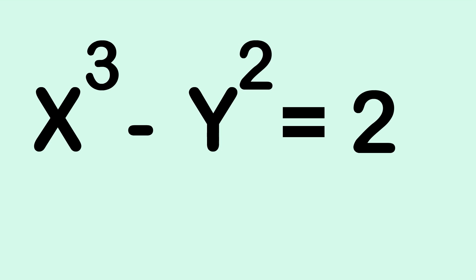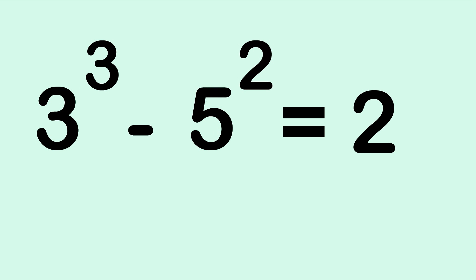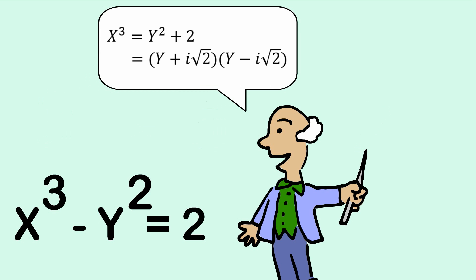And the final one. There is only one counting number solution to x cubed minus y squared equals 2. You might want to pause and think about what it is. So the only solution is x equals 3, y equals 5. And one of the interesting things is the way we prove that generally is using complex numbers. So this is pretty mind-blowing. This is a question or a problem simply about counting numbers, and yet we use complex numbers to work out the proof.